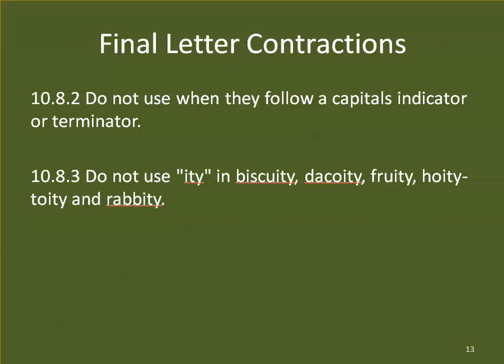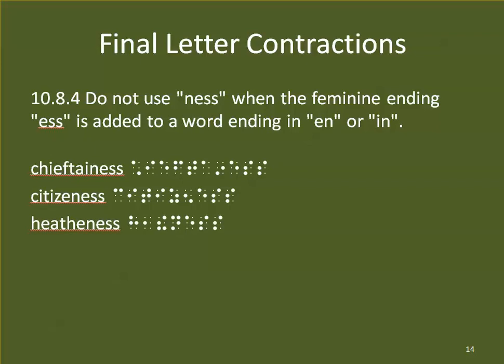One tiny rule: do not use I-T-Y in 'biscuity,' 'decoity,' 'fruity,' 'hoity-toity,' or 'rabbity,' if you ever come across those words. Another obscure rule: do not use the N-E-S-S contraction when the feminine ending E-S-S is added to a word ending in E-N or I-N. So 'chieftainess' — use I-N, not N-E-S-S. 'Citizeness' — use E-N. 'Heathenness' — use the T-H-E contraction, and do not use N-E-S-S.